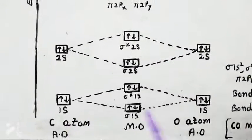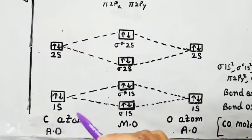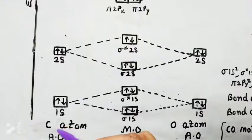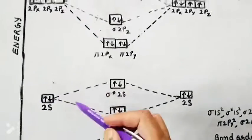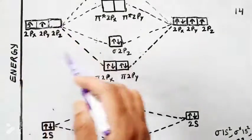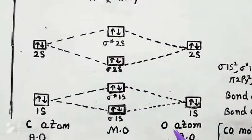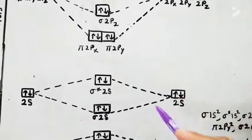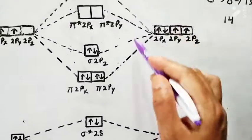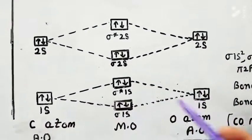This is the carbon atom and on this side is the oxygen atom. The total number of electrons in the carbon atom is 6: 2 will be in the 1s orbital, 2 will be in the 2s orbital, and the remaining 2 will be in the 2p orbital. The oxygen atom has 8 electrons: 2 will be in the 1s orbital, 2 will be in the 2s orbital, and the remaining 4 will be in the 2p orbital. Now we will see how the atomic orbitals are combining with each other.